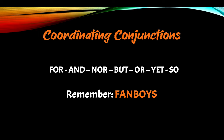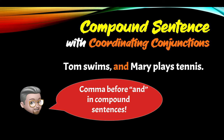Coordinating conjunctions — they are: for, and, nor, but, or, yet, and so. Remember the acronym FANBOYS: F for for, A for and, N for nor, B for but, O for or, Y for yet, and S for so. Don't forget the comma before compound sentences. So: Tom swims, comma, and Mary plays tennis. Don't forget to write a comma before a coordinating conjunction — in this case, and.